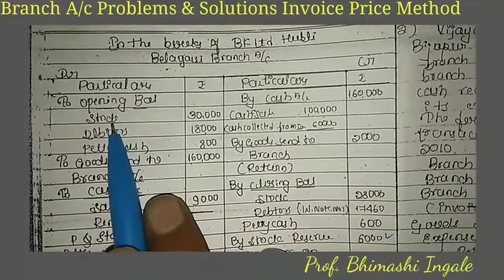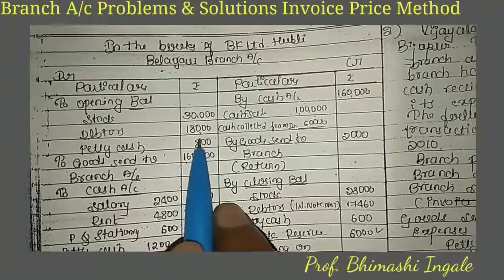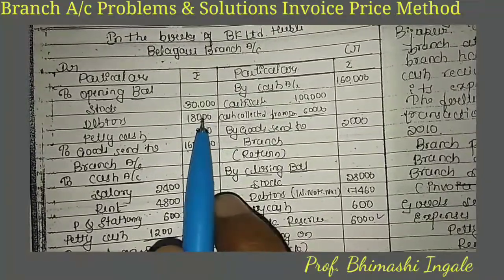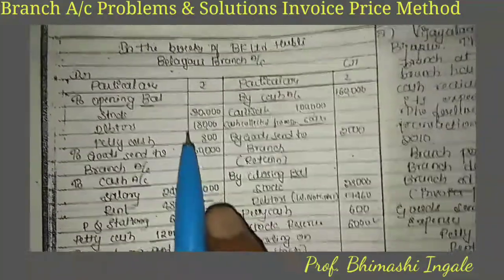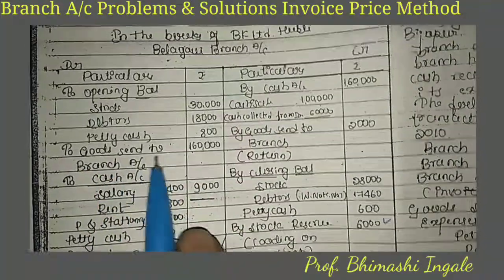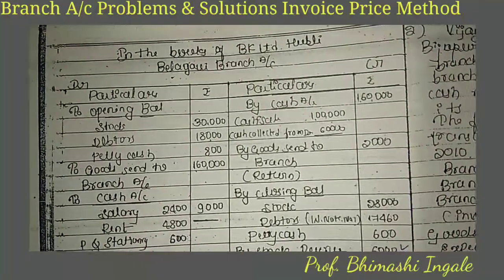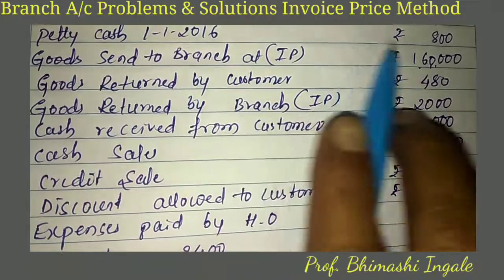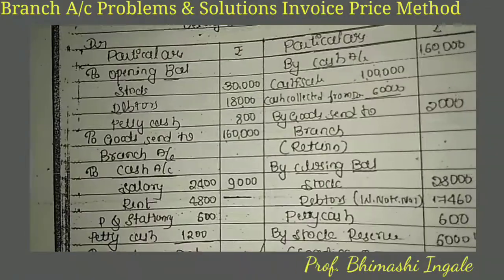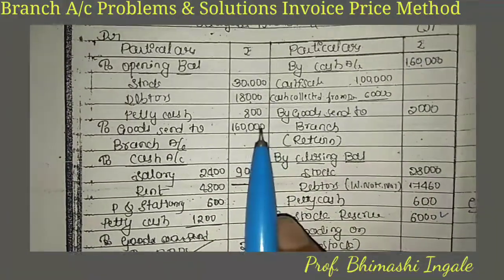On the debit side, opening balances are entered: stock opening balance at invoice price 30,000, debtors opening balance 18,000, petty cash opening balance 800. Next, goods sent to branch at invoice price: 1,60,000.